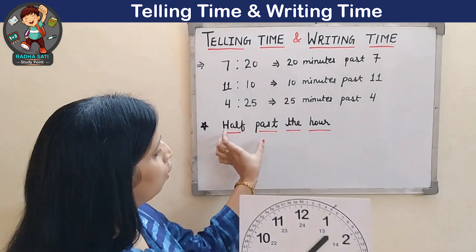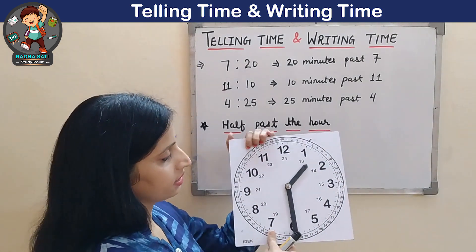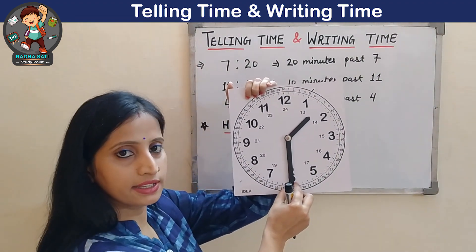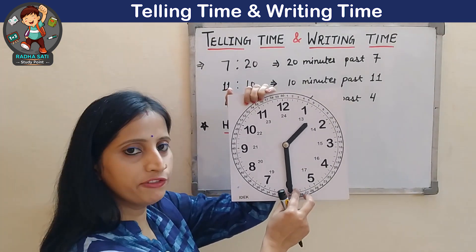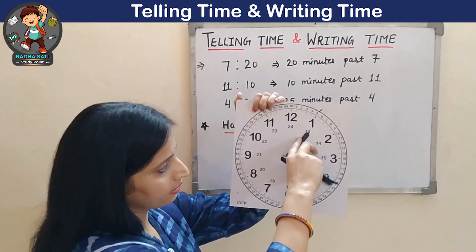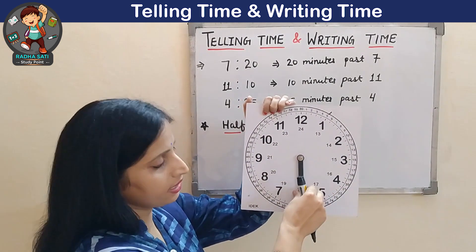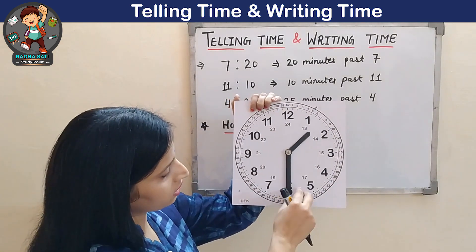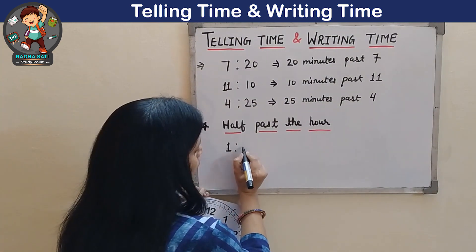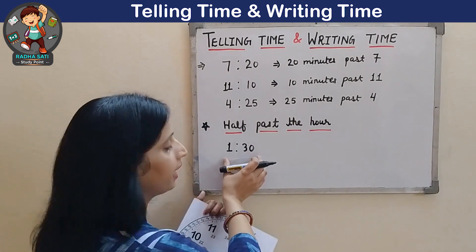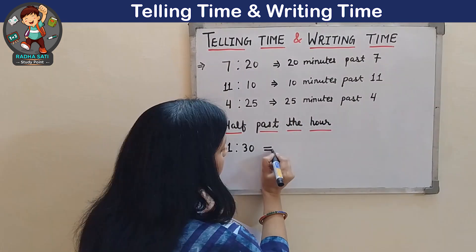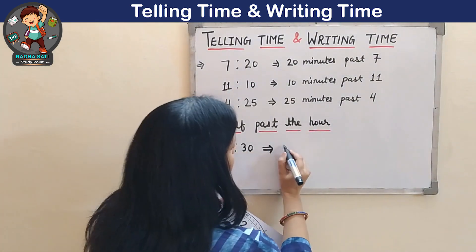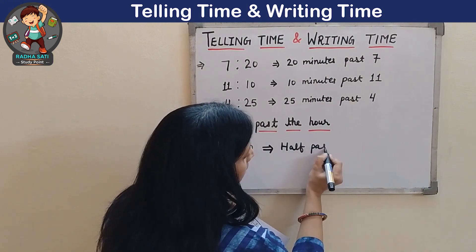Now we will learn about the concept of half past the hour. Whenever the hour hand is between two numbers and the minute hand is at 6, we read the time in the form of half past — meaning half an hour has passed. So this time, the time is 1:30. We write it as: half past 1.